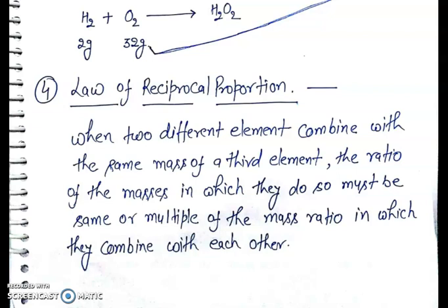Fourth, the law of reciprocal proportion. According to this law, when two different elements combine with the same mass of a third element, the ratio of the masses in which they do so must be the same as, or a simple multiple of, the mass ratio in which they combine with each other.